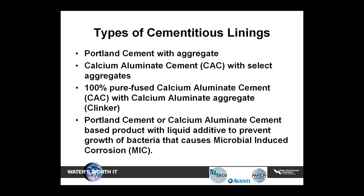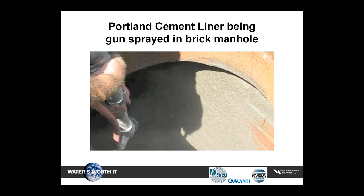Common types of these products include Portland cement with aggregate (typically fine grain sand), calcium aluminate cement with select aggregate, calcium aluminate cement with calcium aluminate aggregate (referred to as clinker, a byproduct from processing calcium aluminate cement), and Portland or calcium aluminate cement-based products with a liquid additive to prevent growth of bacteria that causes microbial induced corrosion (MIC). Portland cement-based products usually exhibit the longest working times, can be applied at a thicker rate per coat, and have the highest 28-day compressive strengths. They may be the most commonly utilized cementitious linings due to lower cost, acceptable corrosion resistance, and user-friendly application.